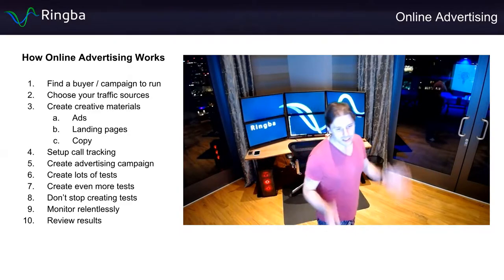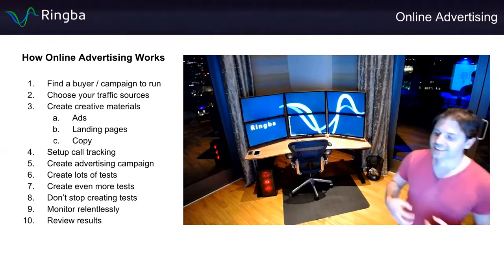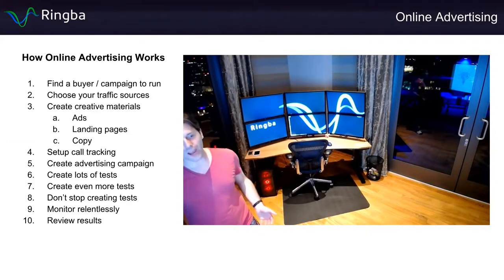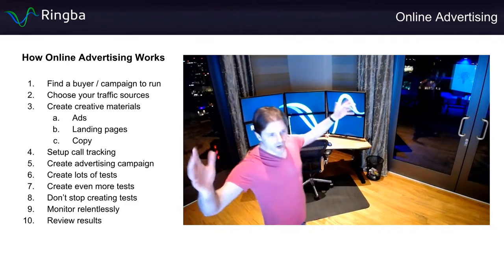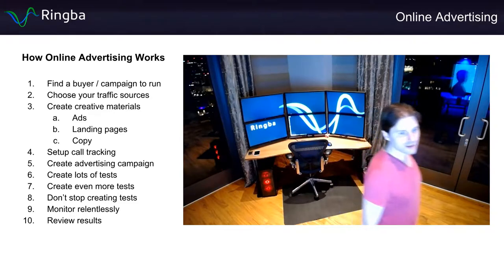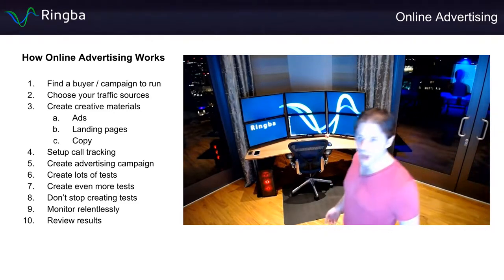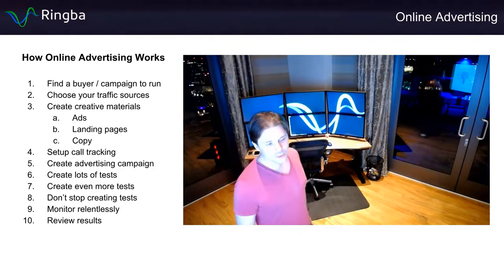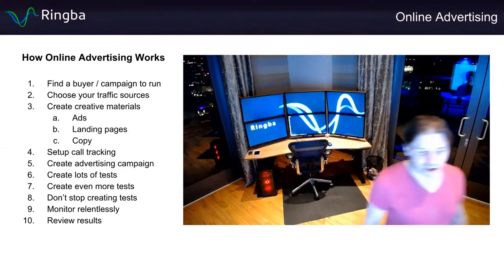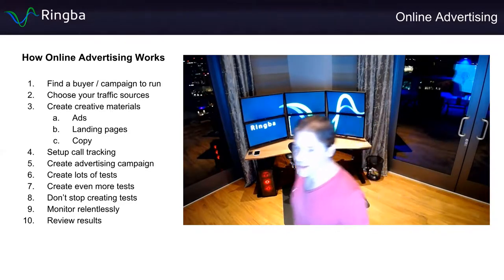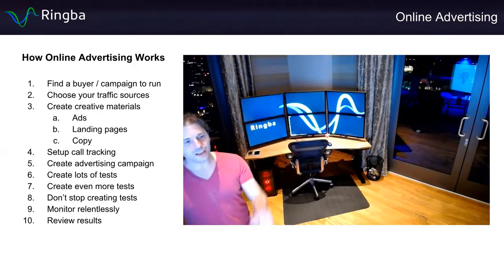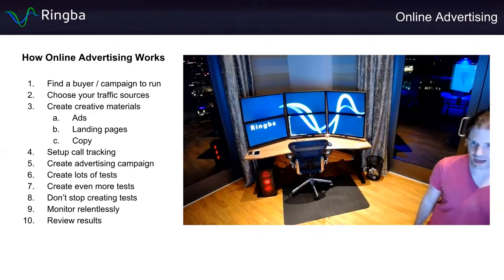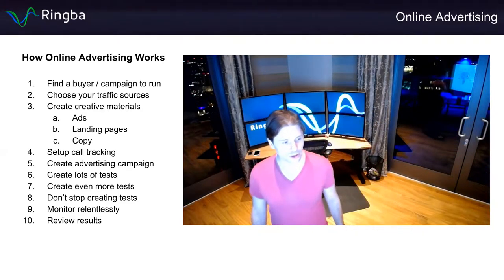Whatever gets the highest click-through rate is what the platform will optimize for — it makes Facebook the most money, it makes Google the most money, and it signals to them that users really want what you're selling. The only way to figure out what ads have the highest click-through rate is to test a large amount of combinations. It's not glamorous and a lot of affiliates don't do it, but you absolutely need to. I still remember grinding thousands of ads in my parents' basement at the beginning of Facebook ads — I made a ton of money because of it.